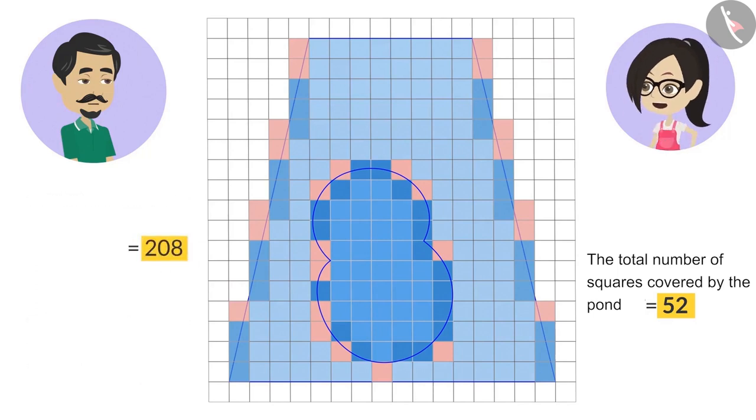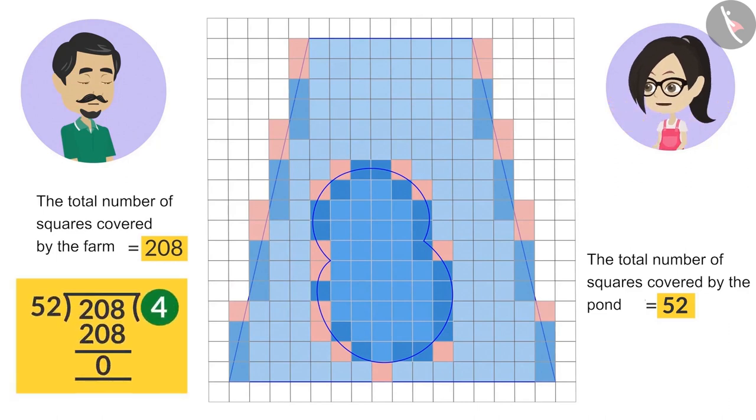This shows that this pond has covered 34 plus 18 equal to 52 squares, which is one-fourth of the squares that are covered by the farm. That means that the engineer has measured it correctly. This pond covers exactly one-fourth of our farm.